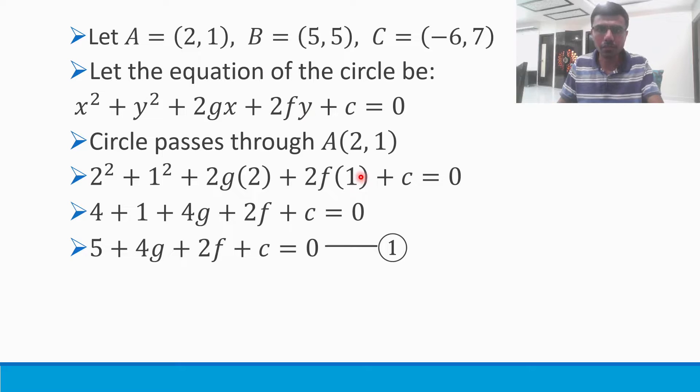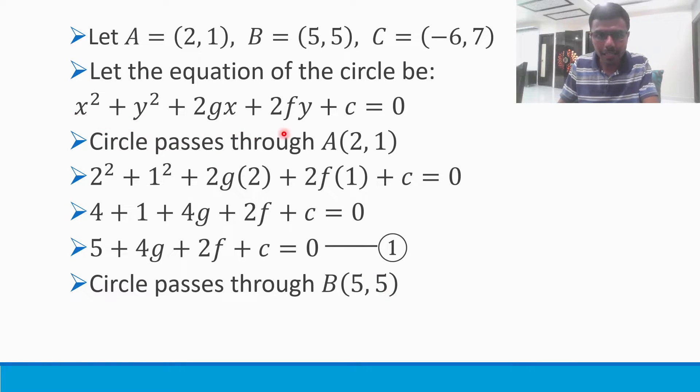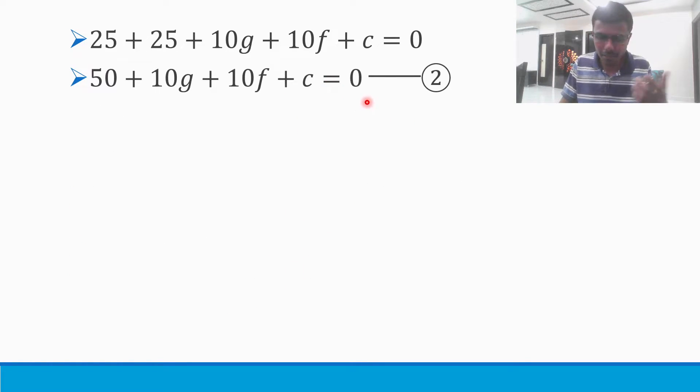Likewise the second point also lies on the circle. The circle passes through (5, 5). So in this same equation put (5, 5). This is what you would get, and simplify. This is my second equation.